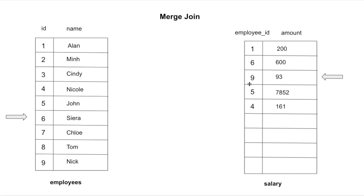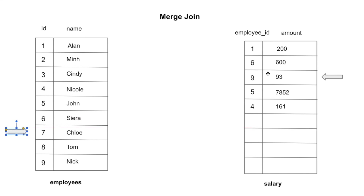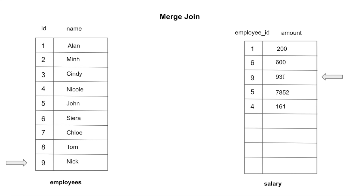Comparing again — not a match, and six is less than nine, so it moves the pointer down. Next row — not a match, seven is not equal to nine. Moving down — not a match, eight is less than nine. Moving to the next row, nine equals nine, so it returns that employees row along with the third salary row. With nine equal to nine, it moves the second pointer to the next row and continues comparing.